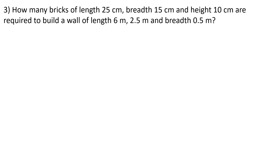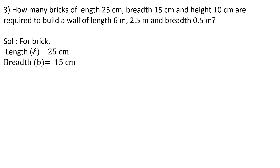Question 3: How many bricks of length 25 cm, breadth 15 cm, and height 10 cm are required to build a wall of length 6 metres, height 2.5 metres, and breadth 0.5 metres? For bricks: l = 25 cm, b = 15 cm, h = 10 cm. For the wall: l₁ = 6 m, h₁ = 2.5 m, b₁ = 0.5 m.